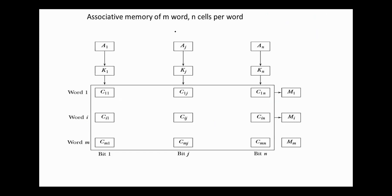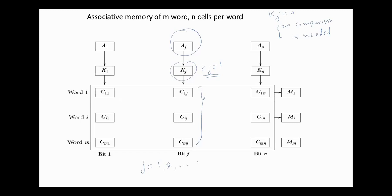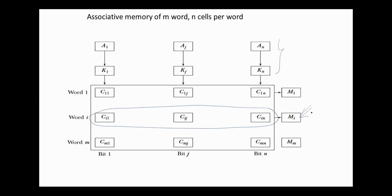Each bit in the argument register is compared with all the bits in column J of the array, provided that K_J equals one. If K_J equals zero, no comparison is needed. This process is done for all columns J equals one, two, et cetera, to N. If a match occurs between all the unmasked bits in the argument and the bits in word I, the corresponding bit M_I in the match register is set to one. If one or more unmasked bits of the argument and the word do not match, M_I is cleared to zero.